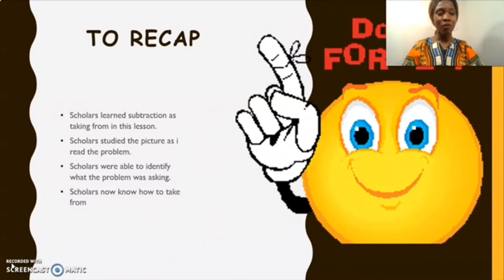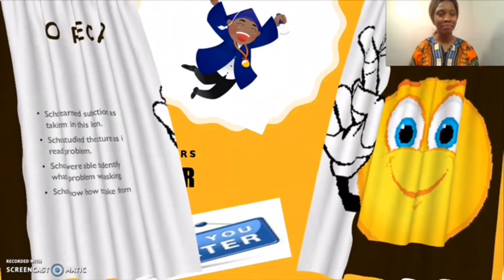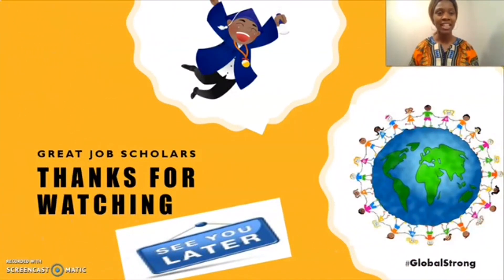Quick recap. Don't forget, as mentioned earlier in our lesson, our objective was to use expressions to represent subtraction within five. Now we understand subtraction as taking from. We were able to study the pictures throughout, which helped us identify what each problem was asking us to do. With that, we were able to solve each problem together. Give yourself some shine! You've done an awesome job. I really hope you enjoyed today's lesson, and I will see you next time.